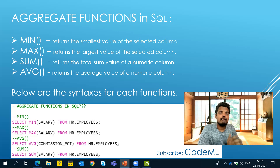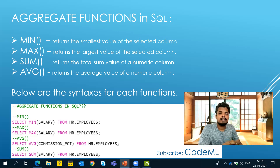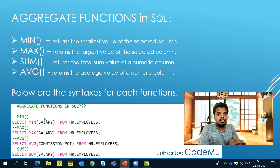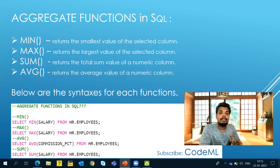The average value is calculated as: sum of all values in the column divided by the total number of values. For example, if there are five values and their sum is 100, then 100 divided by 5 gives us an average of 20. In the screenshot below you can see the syntax for these aggregate functions, and now we will jump directly to the Oracle Live SQL worksheet.